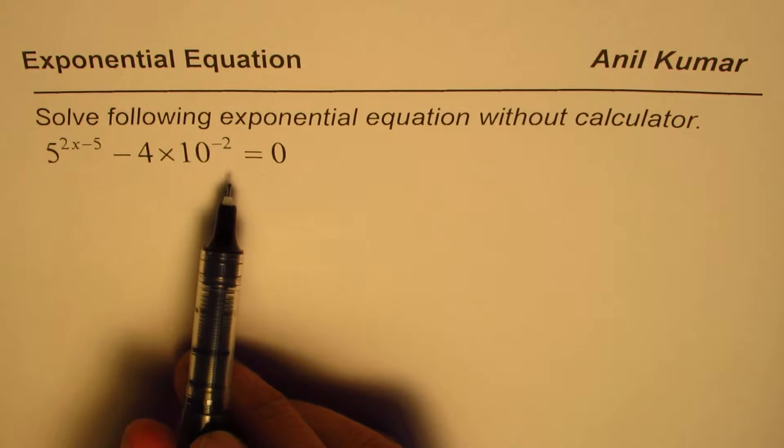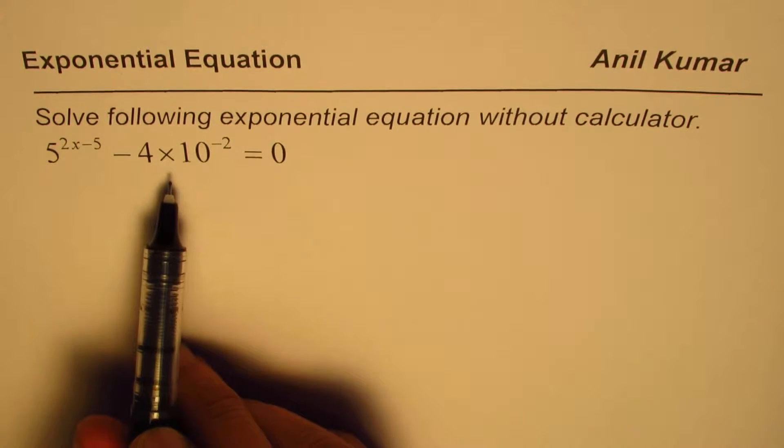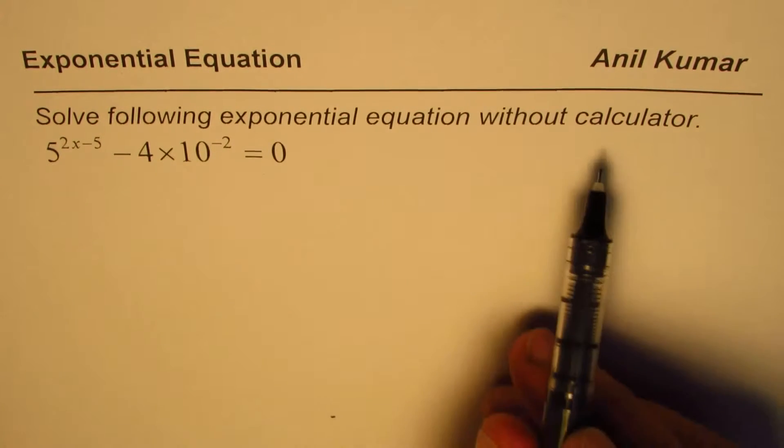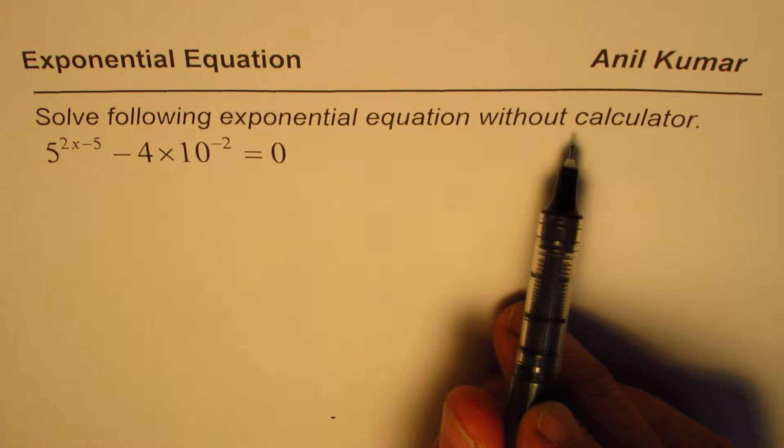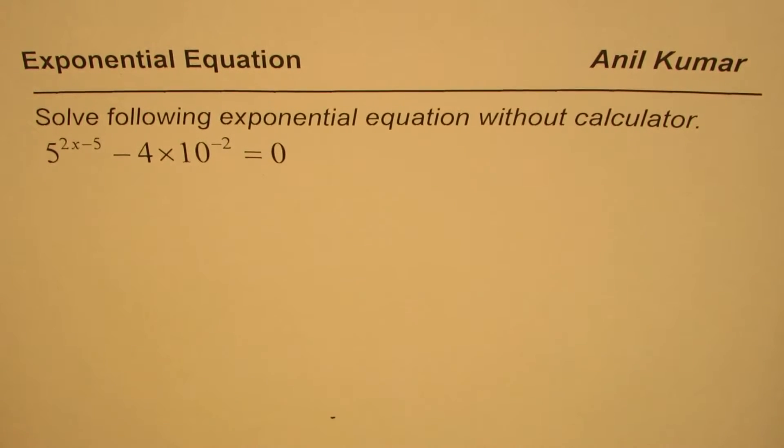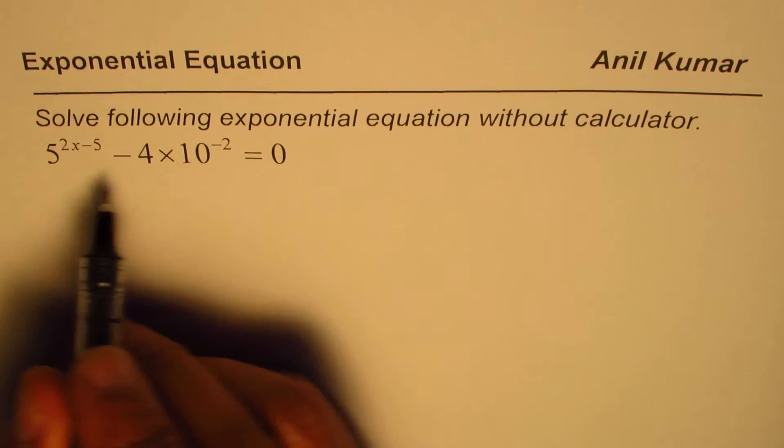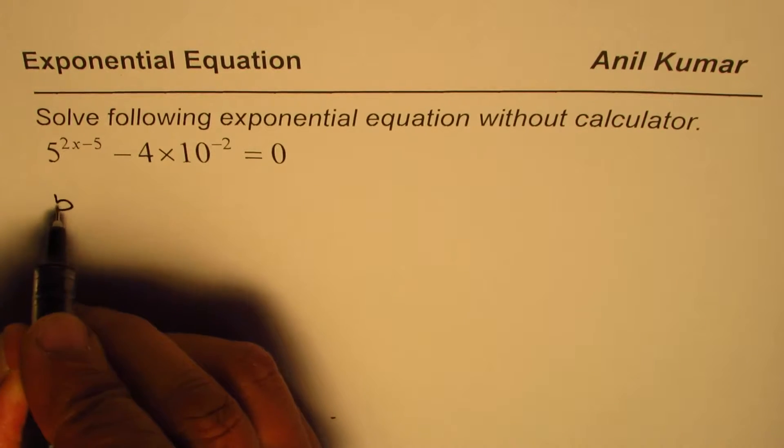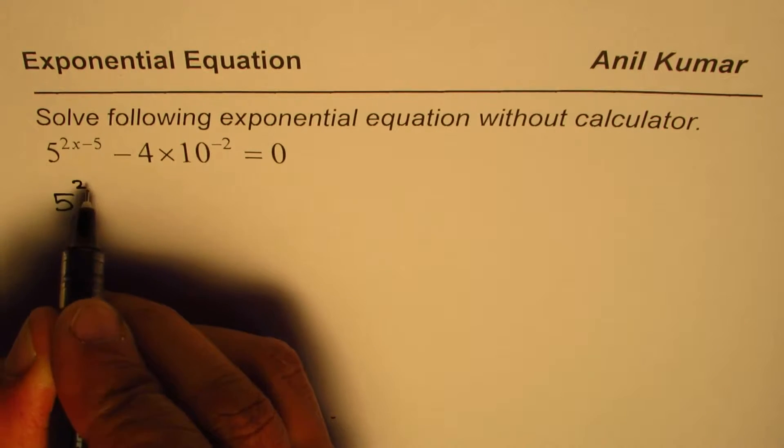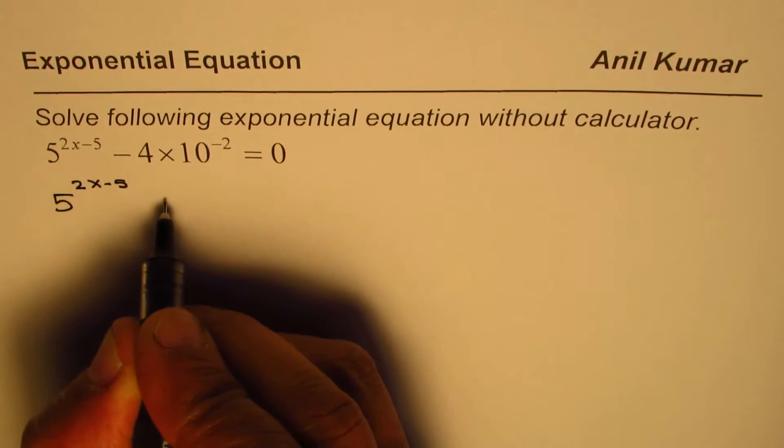You could solve it using logarithms, but since we're working without a calculator, you cannot use logarithms for this equation. Let us try to find an alternate method. In that respect, this question is kind of challenging. So let me rearrange this. If I rearrange, I get 5^(2x-5) = 4×10^(-2).